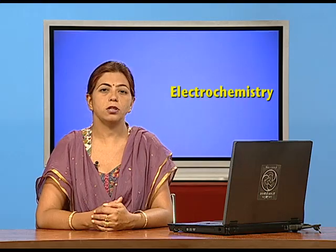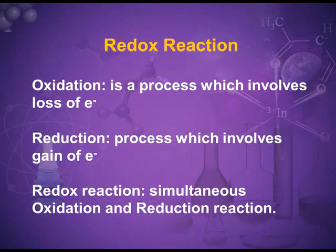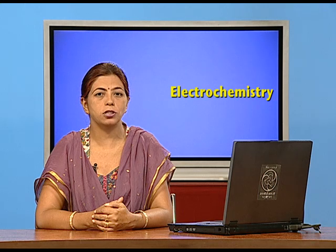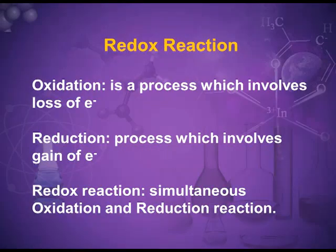The basis of electrochemical reactions is the redox reactions, which you have already studied in class 11th. Before starting electrochemistry or explaining the working of an electrochemical cell, let me give you a brief idea of redox reactions. Oxidation is the process of loss of electrons by a substance. Reduction is the process of gain of electrons by a substance. Oxidation and reduction take place simultaneously, so we call them redox reactions.